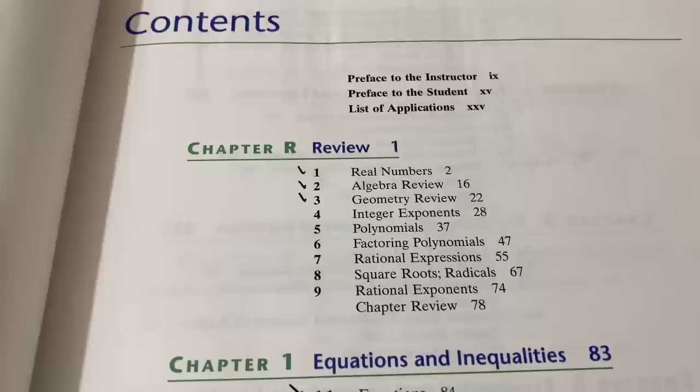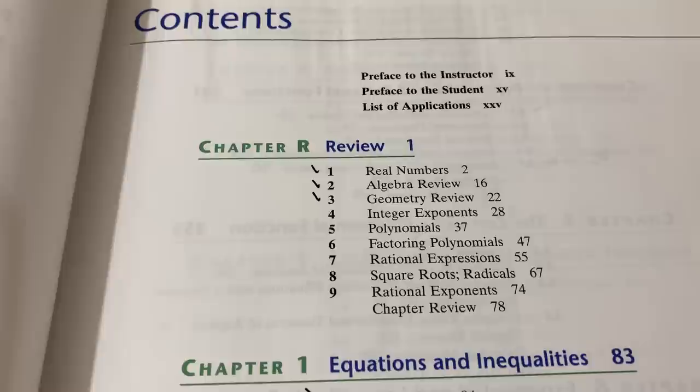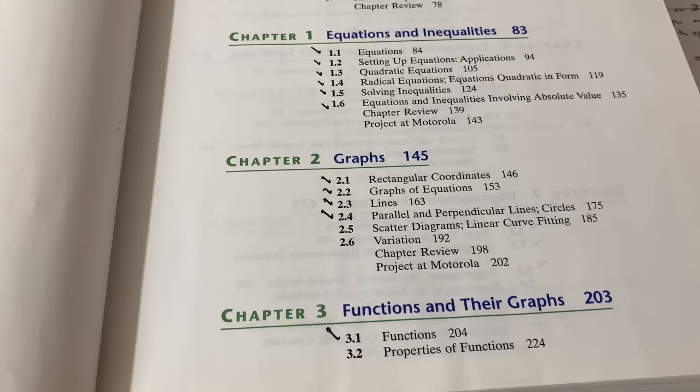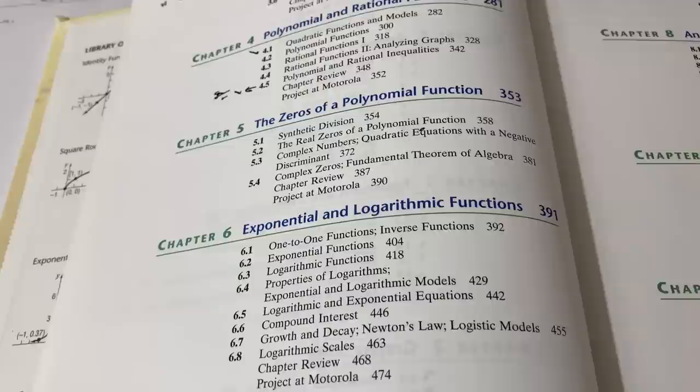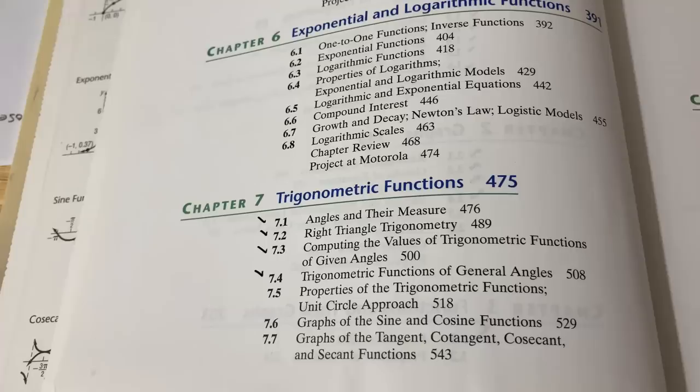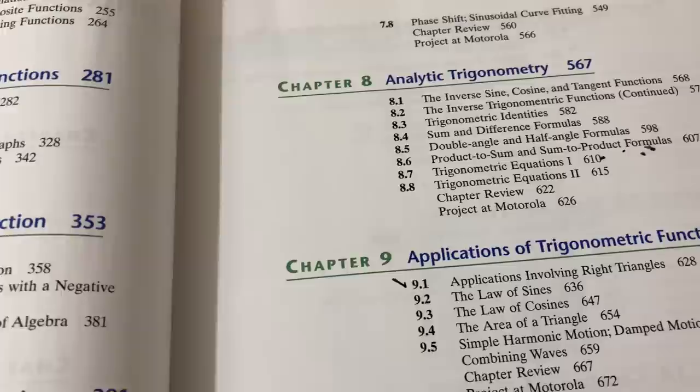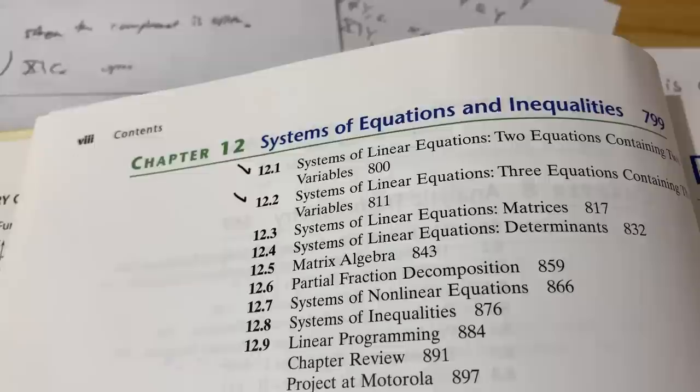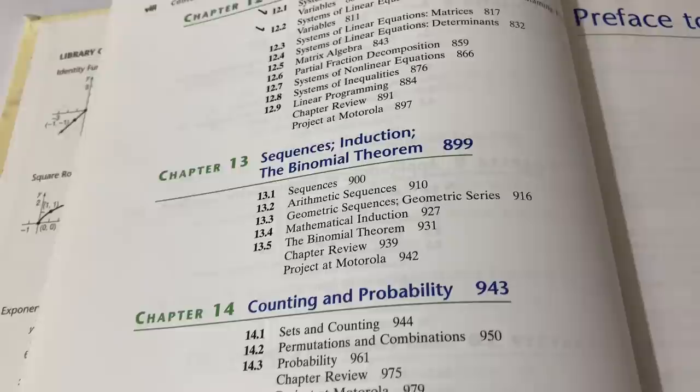Let's briefly go over the contents so you can see what this covers. Chapter R is the review chapter, and it basically covers stuff that you might cover in an intermediate algebra course in college. Chapter one is on equations and inequalities. Two is on graphs, and three is on functions and their graphs. Four is on polynomial and rational functions. Five is on the zeros of a polynomial function. Then we have exponential and logarithmic functions. Chapter seven is where the trigonometry starts, and then it goes into chapter eight, which is more trig. Nine is more trig, and then ten you talk about polar coordinates and vectors. Chapter 11 covers conics, twelve is on systems of equations and inequalities, and then it goes on to sequences, induction, and the binomial theorem.